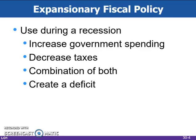The first type of government intervention, expansionary fiscal policy, is used to combat a recession. The problem during a recession is that aggregate demand is too low, causing cyclical unemployment. So increasing government spending and/or a reduction in taxes will increase aggregate demand.